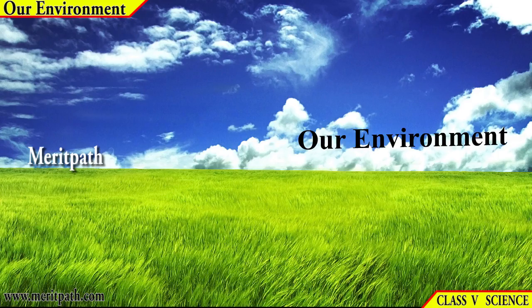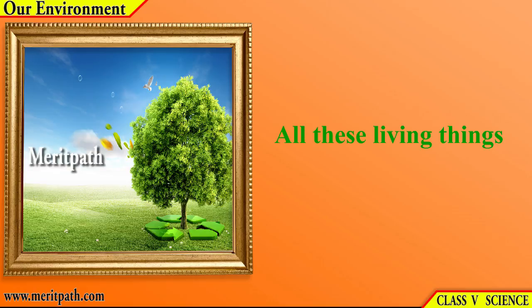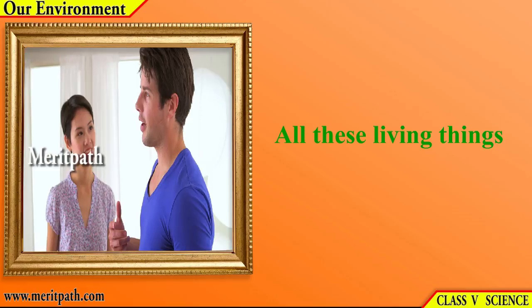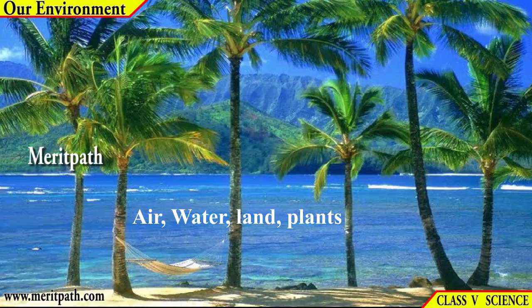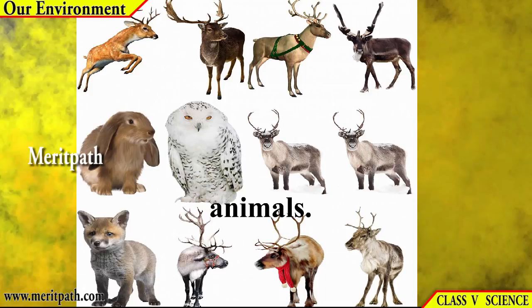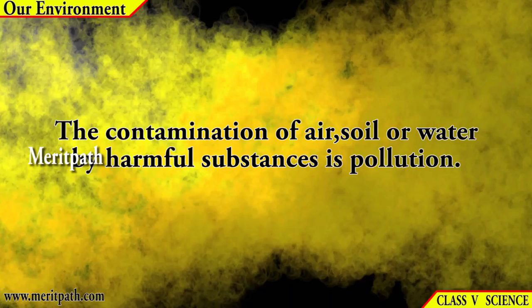Our environment consists of all the living and non-living things around us, like air, water, land, plants, and animals. The contamination of air, soil, or water by harmful substances is called pollution.